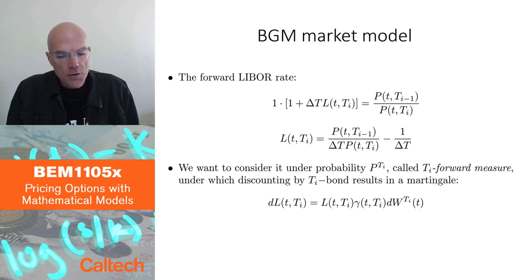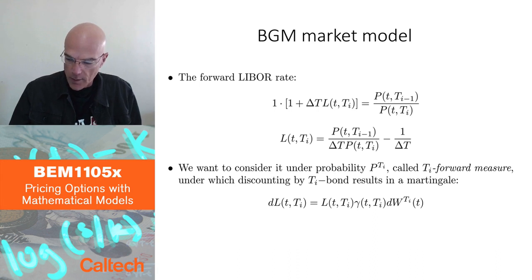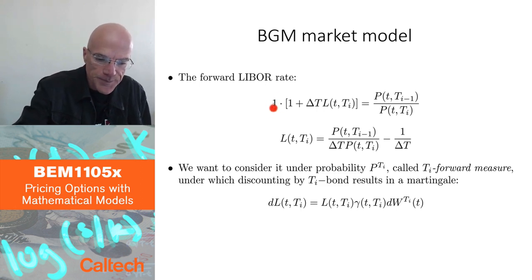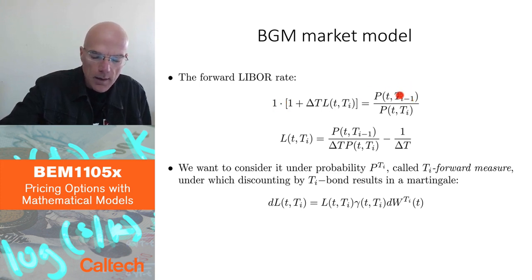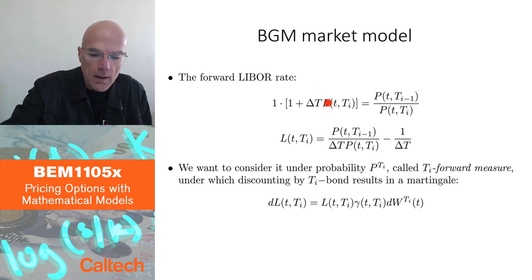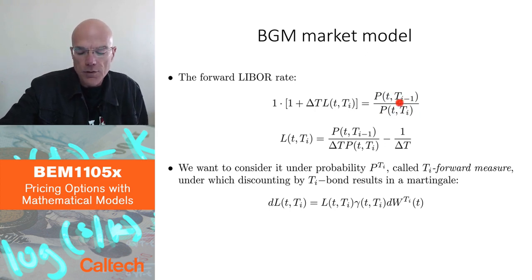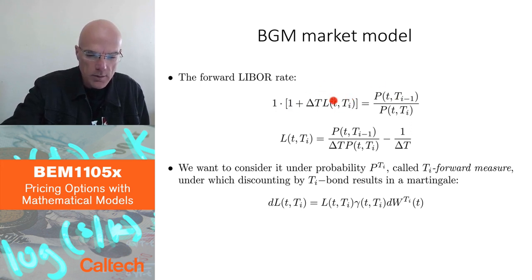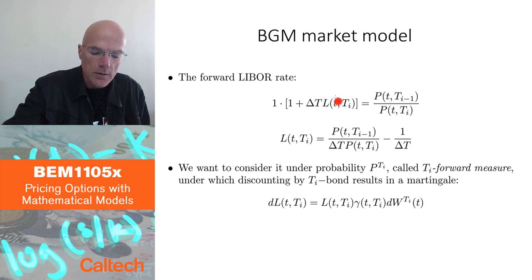Remember the definition of the LIBOR rate — the forward LIBOR rate. If you invest one dollar at T_i minus 1, then after time delta T, which is the difference between T_i and T_i minus 1, you would have the ratio P(T_i minus 1) over P(T_i). This is just the definition of the forward rate, but now we call it the LIBOR rate because it's computed not as a continuously compounded rate, but as a simple rate.